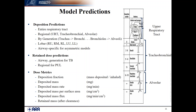For retained dose, it calculates per airway and per generation for both the TB and pulmonary regions. The various dose metrics available for extrapolation include deposition fraction, deposited mass, deposited mass rate, deposited mass rate per surface area, deposited mass flux, and retained mass.